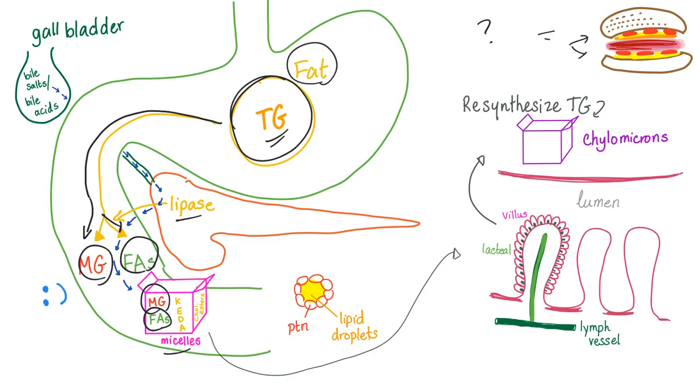So we have the fatty acid, the monoglycerides, the K, E, D, and A, which are the fat soluble vitamins, and some cholesterol esters. You package them together. This package is called a micelle.